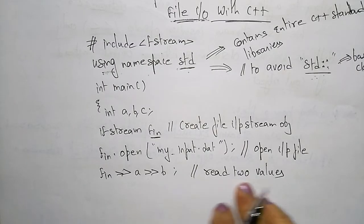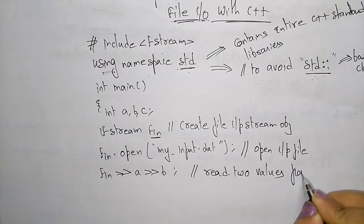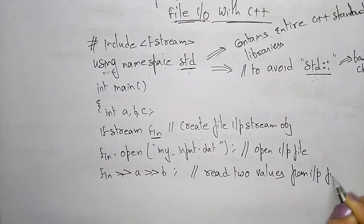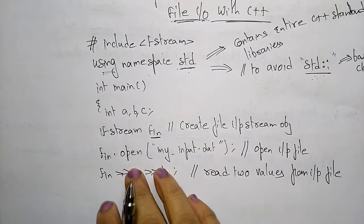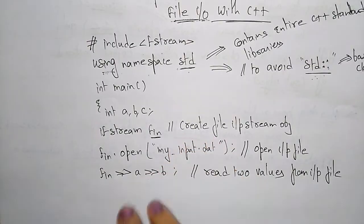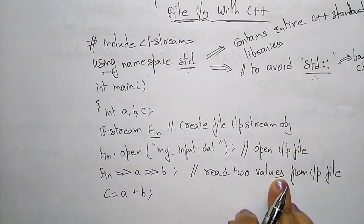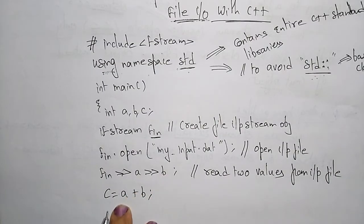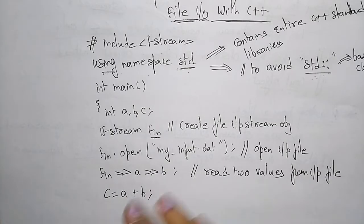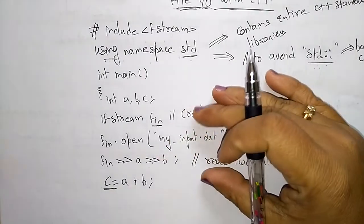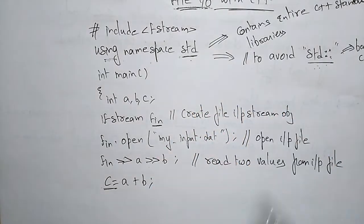After opening, we read the values: fin >> a >> b. This step reads two values from the input file. Already in the input file the a, b, c values are there — those values will be read. After that, c = a + b. Whatever values we read are placed in a + b and the result is stored in c. Up to here the reading is done.